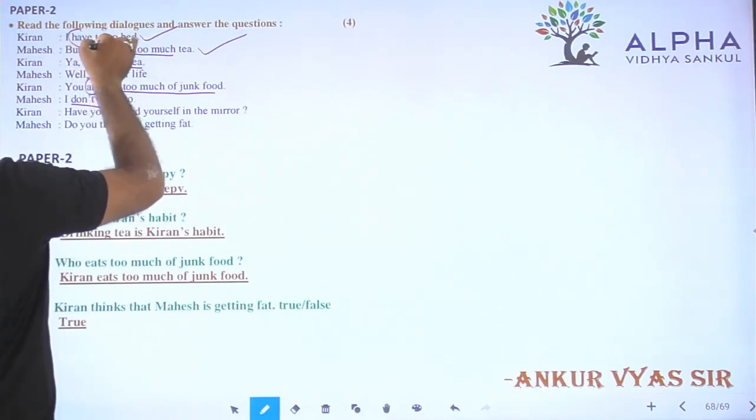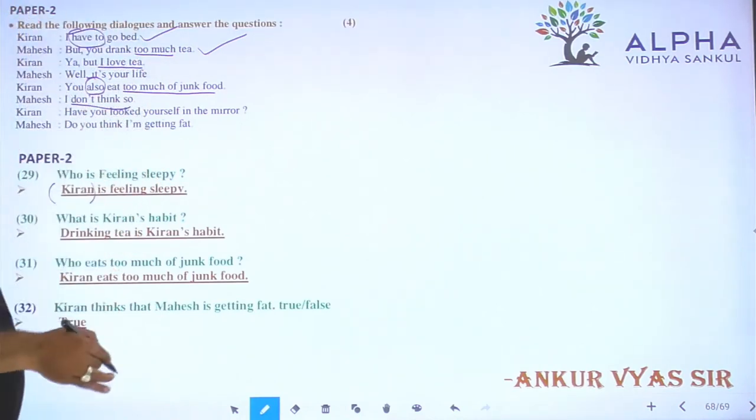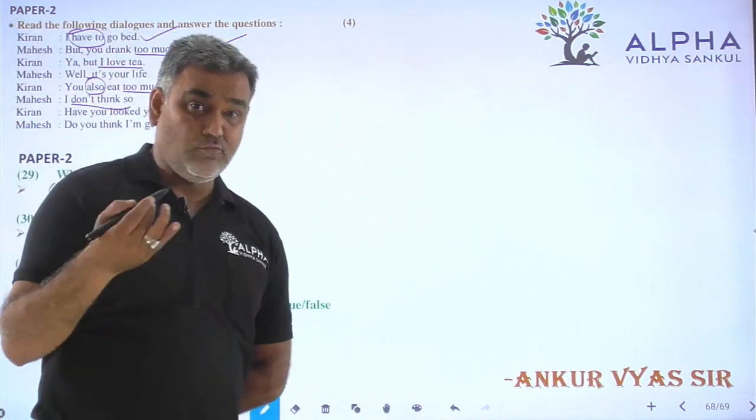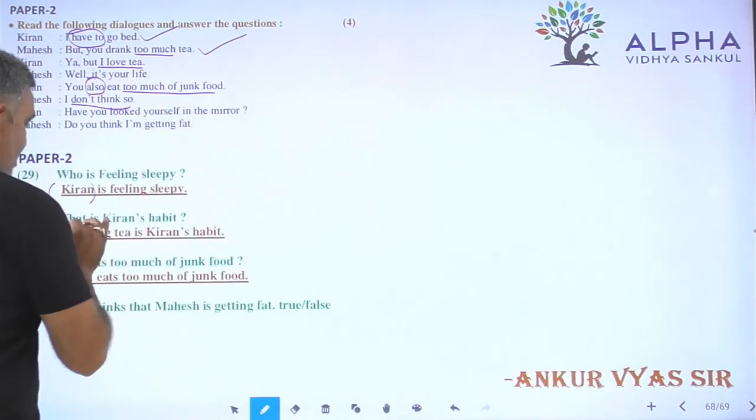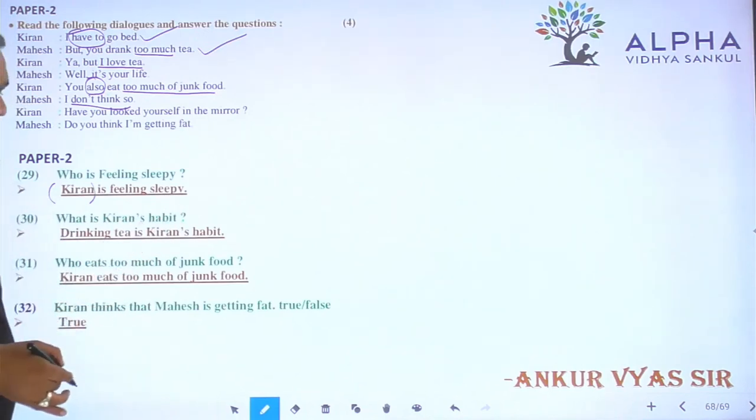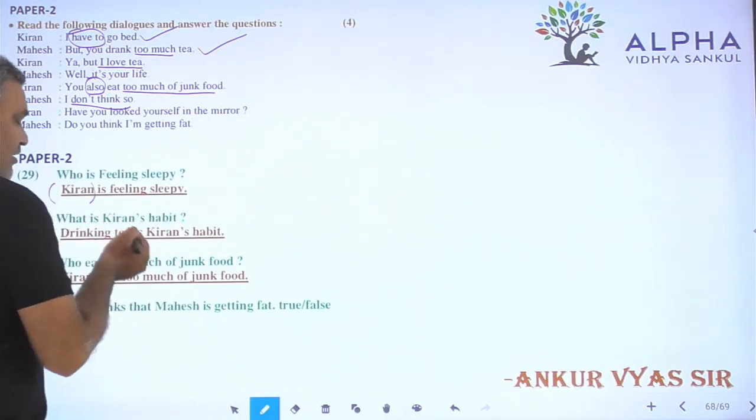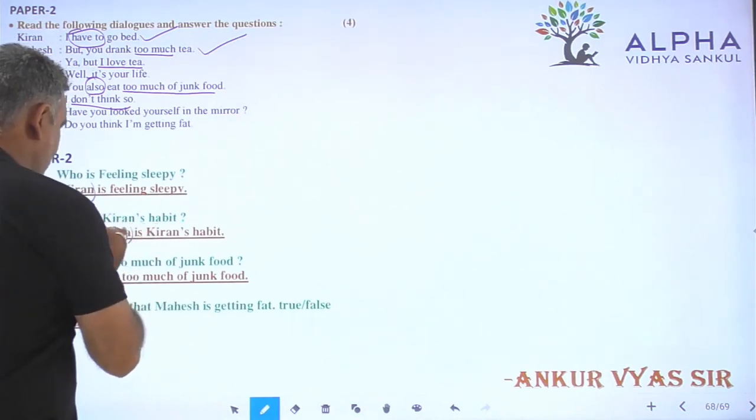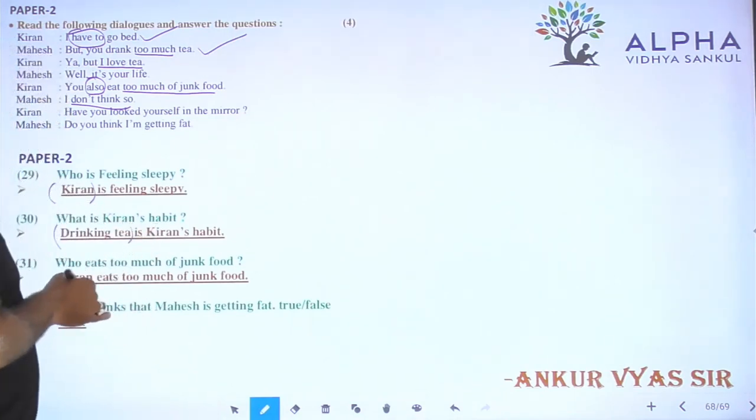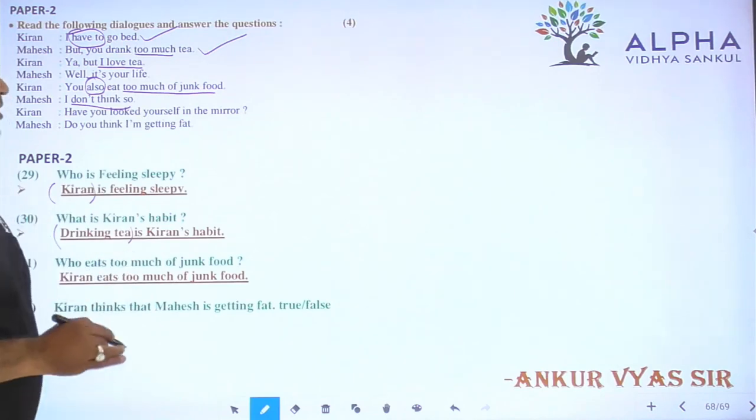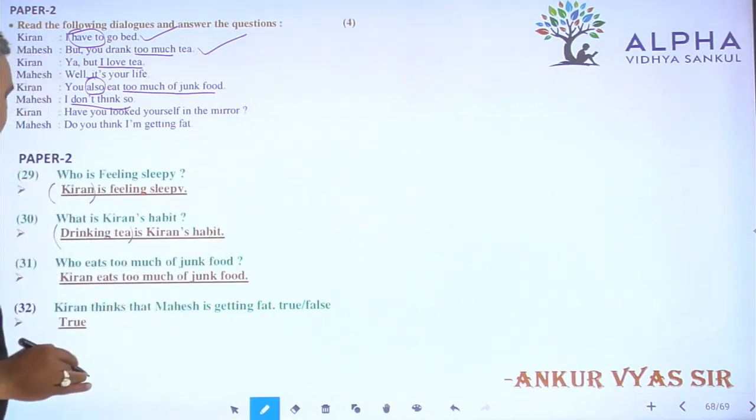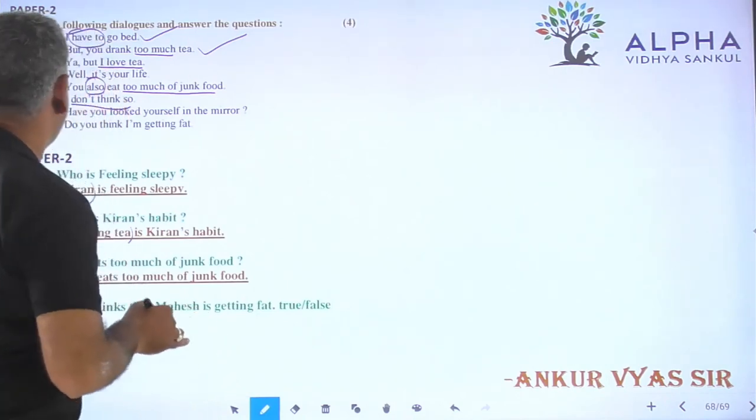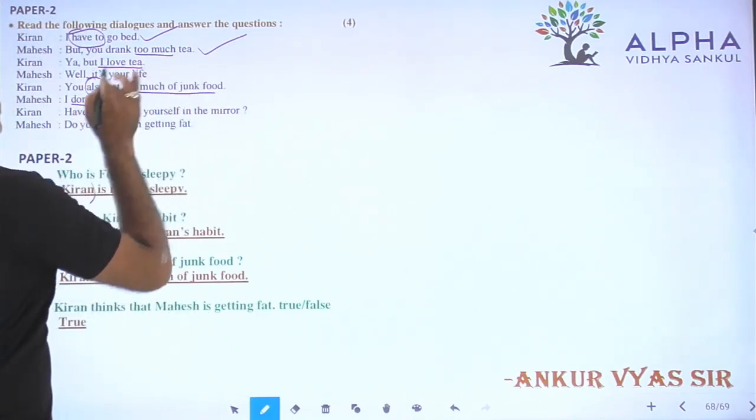To go to bed, what is Kiran's habit? So having tea or having too much tea, drinking too much tea, yeah too much tea is Kiran's habit. Who eats too much of junk food? So you also eat too much of junk food.